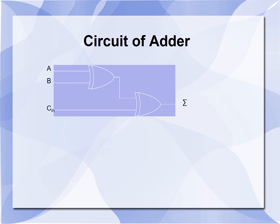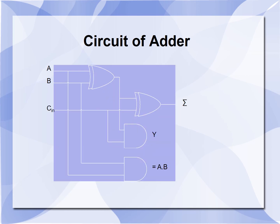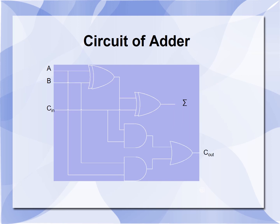The full adder circuit is made up of two half adders. The first half adder consists of an XOR gate and an AND gate. The second half adder takes the sum output of the first XOR gate as well as the third input C-in, fed to both the XOR gate and AND gate. The two AND gate outputs are combined to get the carry output. Carry output equals (A XOR B)·C-in + A·B.